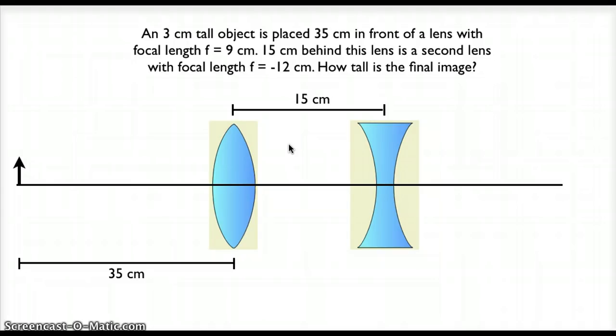Likewise, to the right of lens number 1 will be the real side of lens number 1, and to the right of lens number 2 will be the real side of lens number 2. In any two-lens problem, the virtual side and the real side are always the same sides for both the first and second lens. In this problem, the left side is virtual and the right side is real.